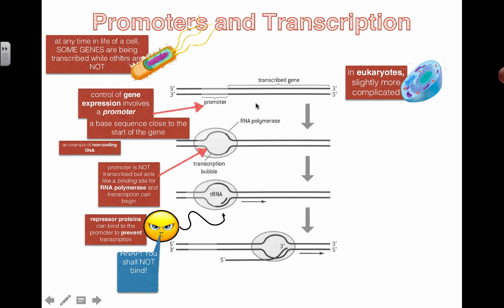So one way to control gene expression or one way to regulate genes is to have repressor proteins. And this is found through a lot of different specific examples. Repressor proteins can bind to the promoter to prevent transcription. So this guy's saying, RNA polymerase, you shall not bind. I was going to do a Lord of the Rings voice, but I don't know. Haven't done it for a while. Didn't want to embarrass myself.